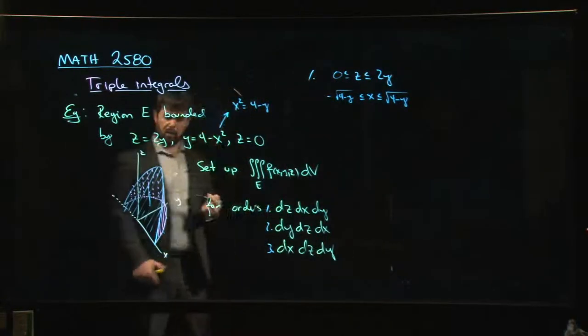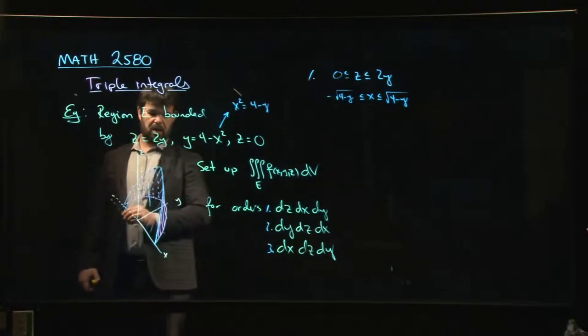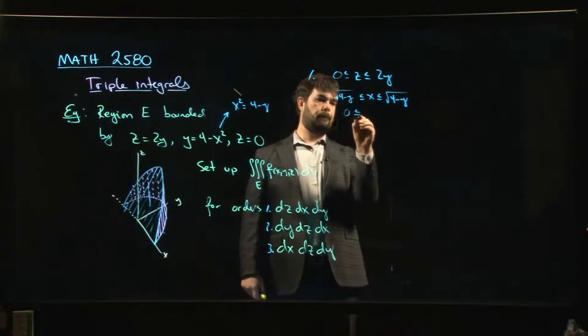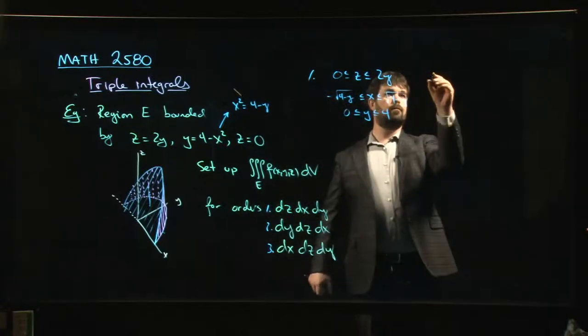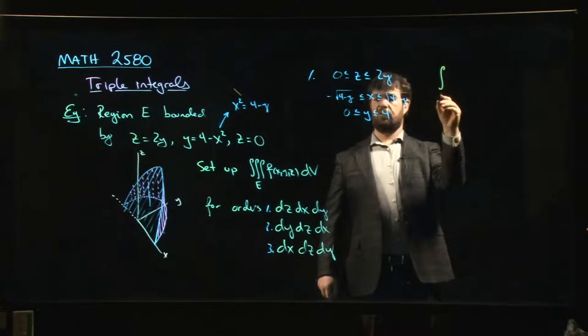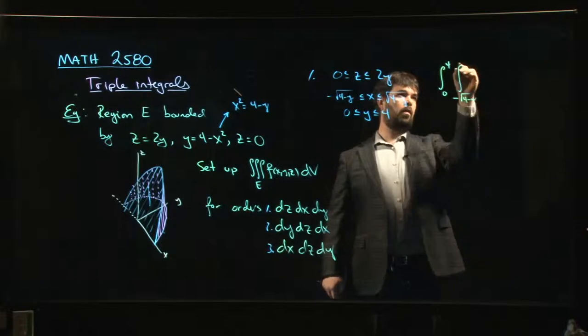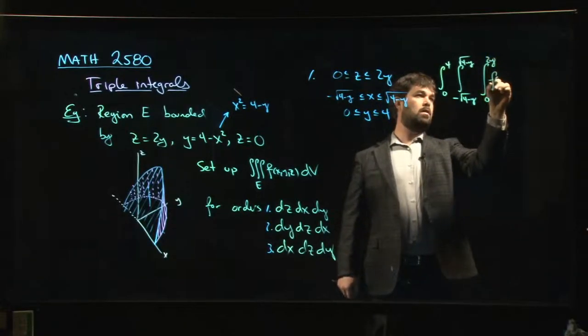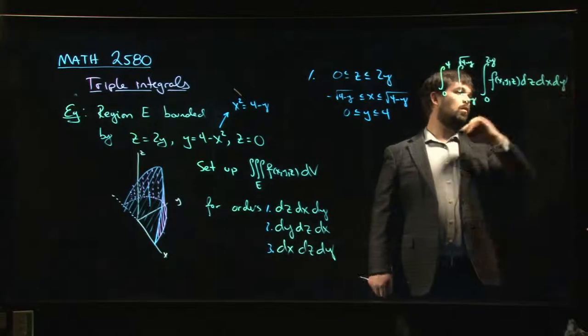And then finally, we just have to say, well, what are the y values that we have here? So now we're just looking for, as numbers, what are the smallest and biggest y values that we see? Well, y starts here at zero, ends over here at four, because when x equals zero, y equals four. Okay? Like so. And so that would give me this for my integral. It would give me the integral from zero to four, the integral from minus root 4 minus y to plus root 4 minus y, and then from zero to 2y, f of x, y, z, dz, dx, dy, right?